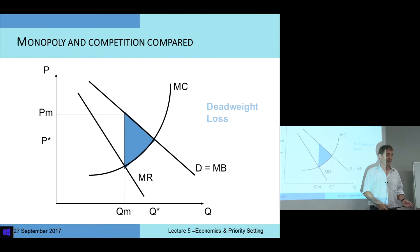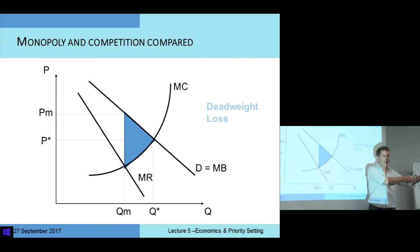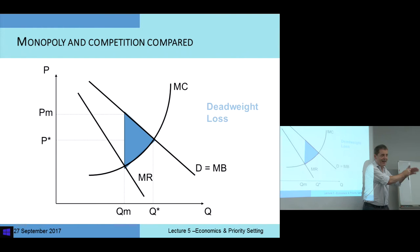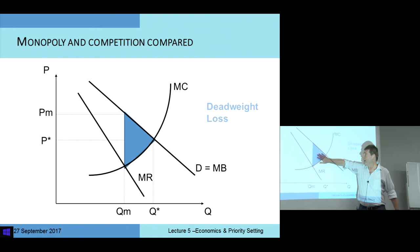It gets a little bit more complicated when we're thinking about the supply of new drugs, because we go out of our way to make firms into monopolists. We give them patent protection for X years and say nobody can produce a similar drug — they're not allowed to. So we are making monopolists. There might be a good reason for that, but that would be another lecture. But there is a dead weight loss, so monopoly is a bad idea.